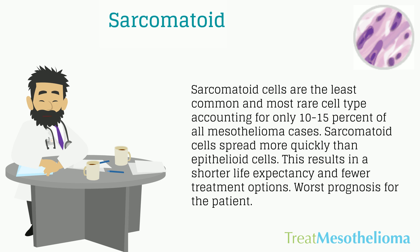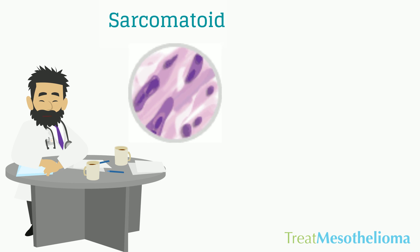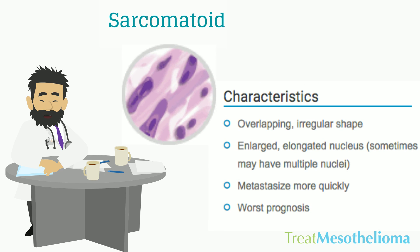Sarcomatoid cells are the least common and most rare cell type, accounting for only 10–15% of all mesothelioma cases. Sarcomatoid cells spread more quickly than epithelioid cells, resulting in a shorter life expectancy and fewer treatment options — the worst prognosis for the patient.